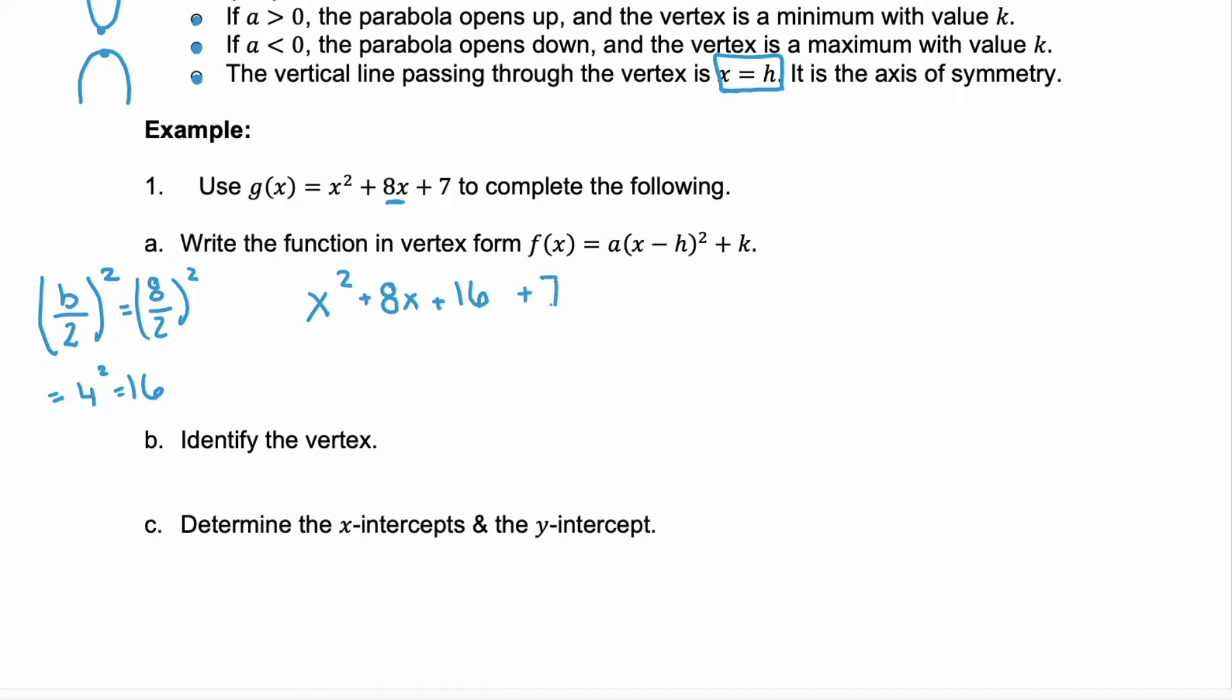We have that original plus 7, and then we're going to subtract the 16 that we added. The reason we do that is because they cancel each other out, and we are not altering that original function. We're just rewriting it so that these first three terms give us a perfect square trinomial. And we can factor those first terms as x plus 4 squared. And then those last two terms will simplify to negative 9. So now we have our function g of x, and we have written it in vertex form.